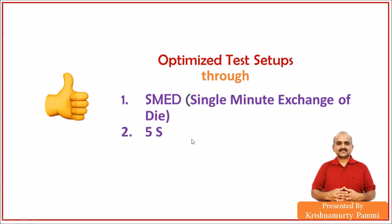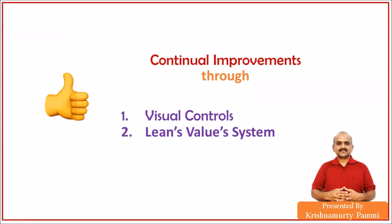To summarize: we optimized test setups using Single Minute Exchange of Die technique and 5S technique — these two lean techniques. Now, continual improvements through visual controls and lean's value system. We had so far achieved value addition; now this must go continual. 'Continual' means each time you make a rotation, you achieve a certain height — like a spring, achieving more height with each circle. This is different from 'continuous,' which means circling at the same height.